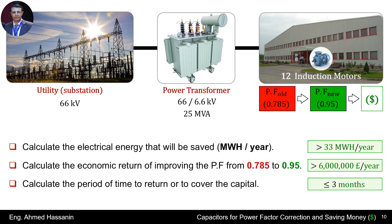This factory is supplied with electrical energy through a power transformer rated 66 to 6.6 kilovolts, with a rated power of 25 megavolt-amperes. The main source of electrical energy is the generation station or utility substation at a rated voltage of 66 kilovolts.